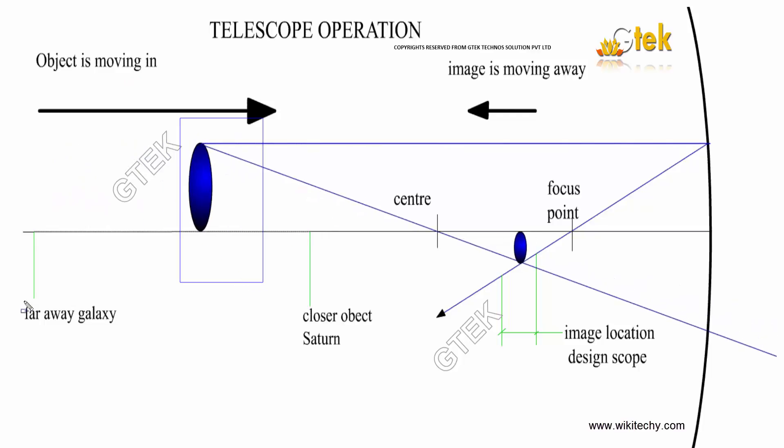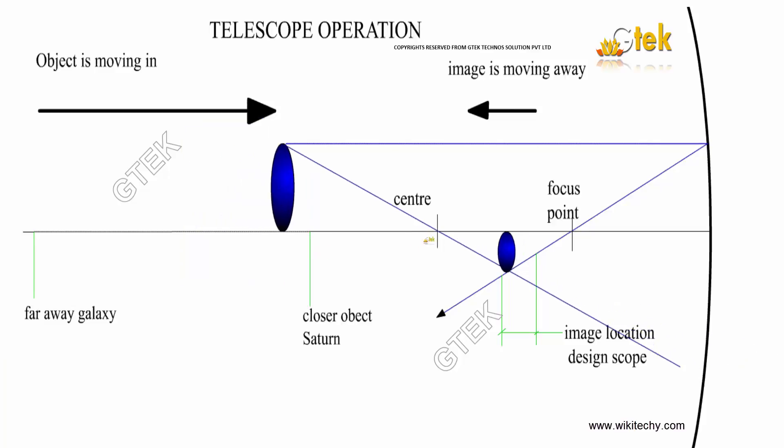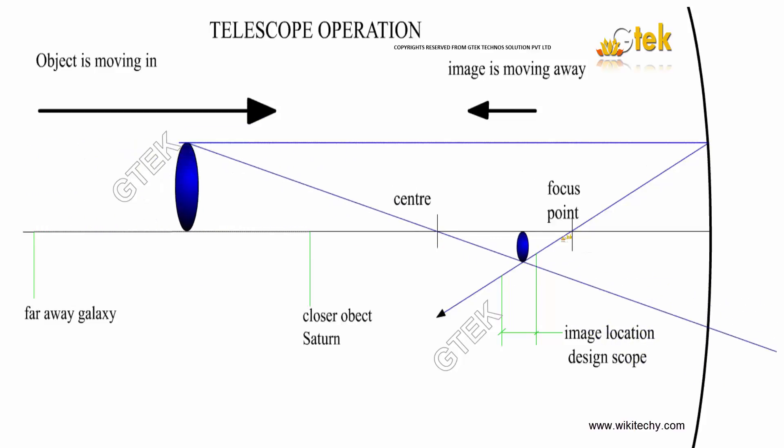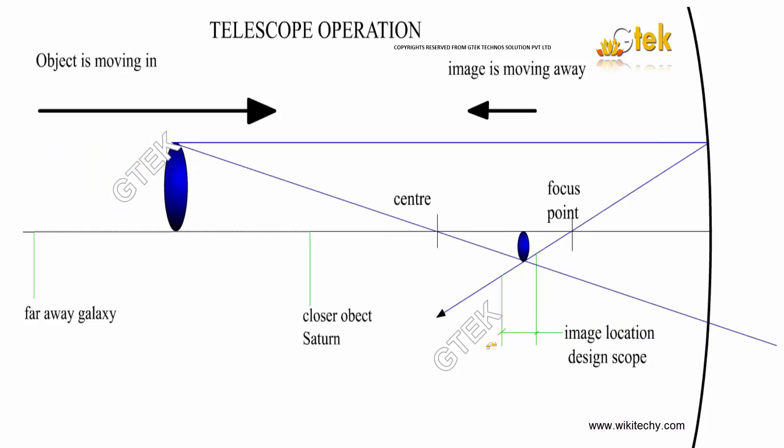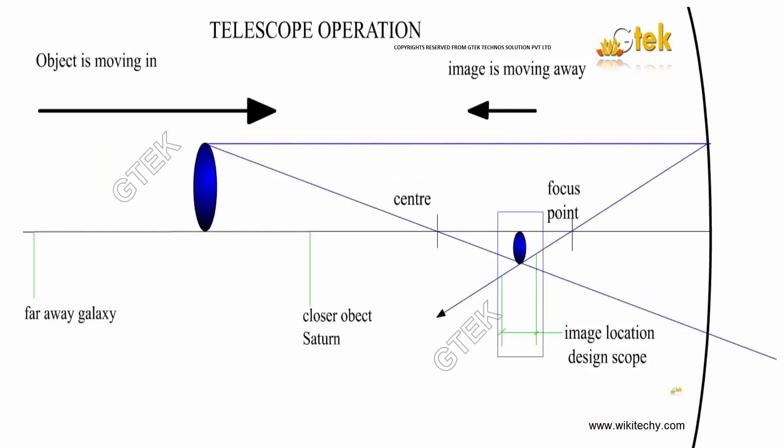This object is far away from the galaxy when it is taking a position to move from one point to another. This one is the center region where you can see the focus point. When the object is going to be moved you can see the view how it will be. This is the image location design of a telescope, so from here we can see the thing.